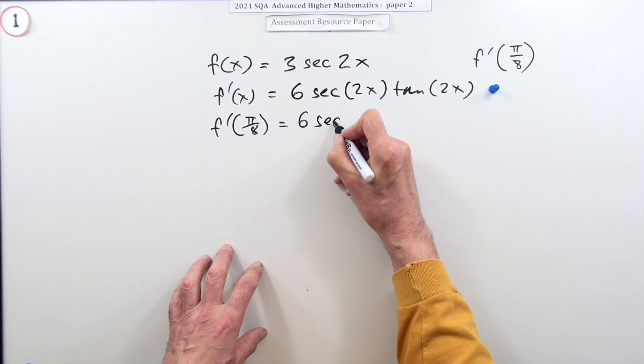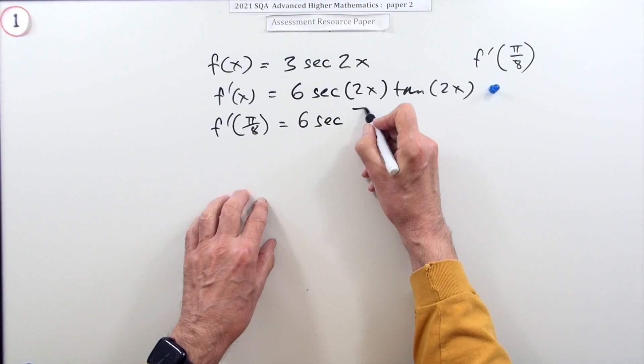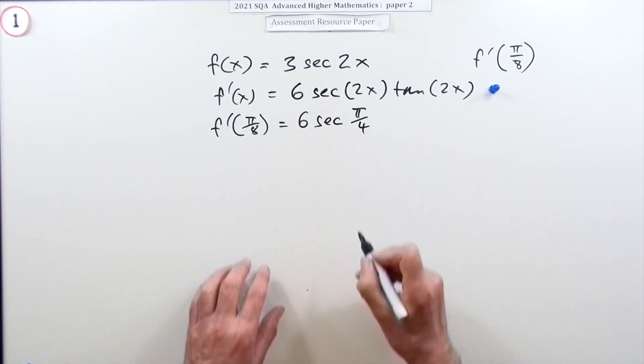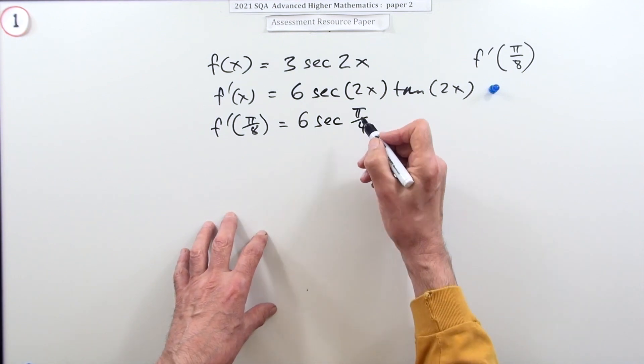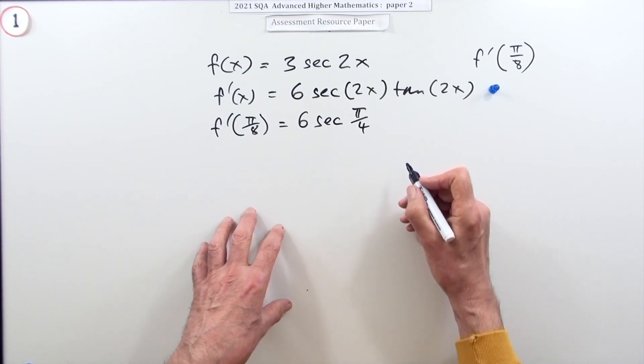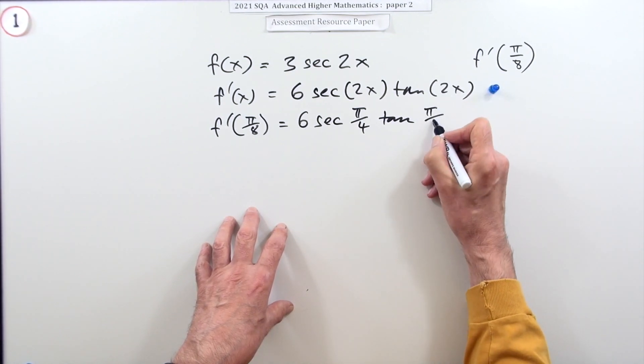It'll be six times sec, which is upside down cos. Now two times π/8 will just go straight in as π/4, and you know that - you know 45° - although it's a calculator paper. The cos of 45° is 1/√2. Tan, again of 45°, π/4, and the tan of 45° is one, so we can just put those figures in.